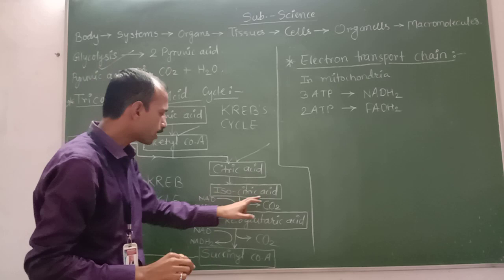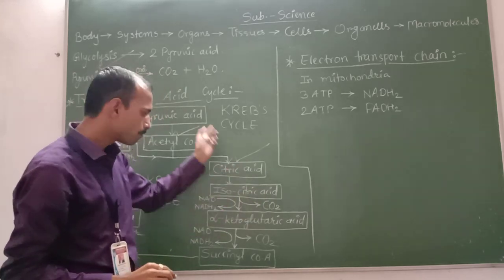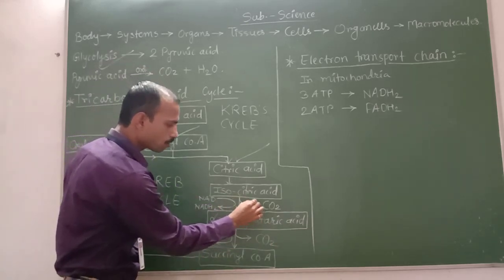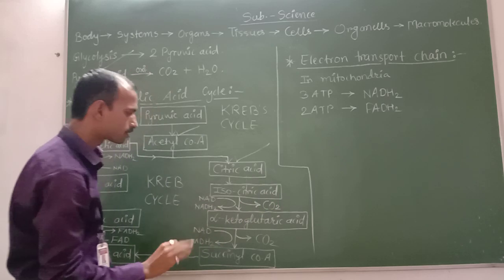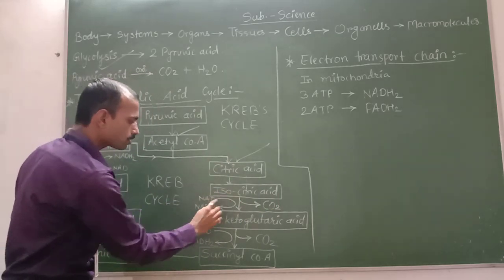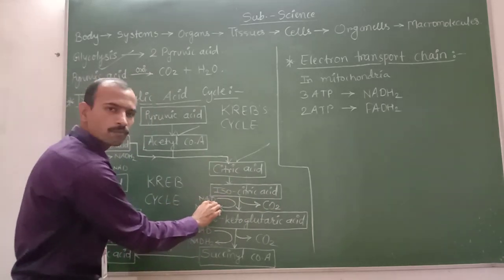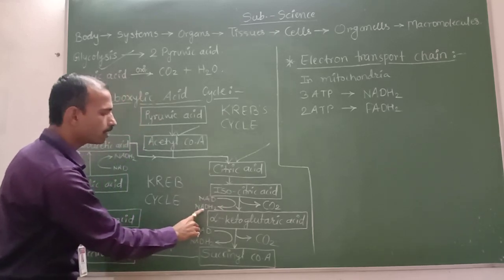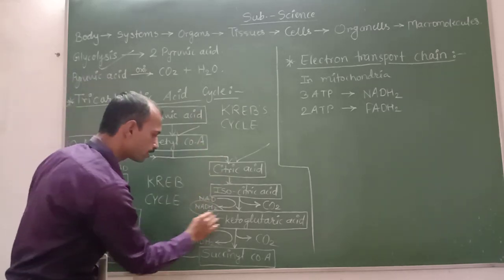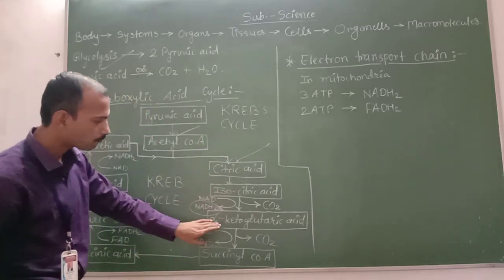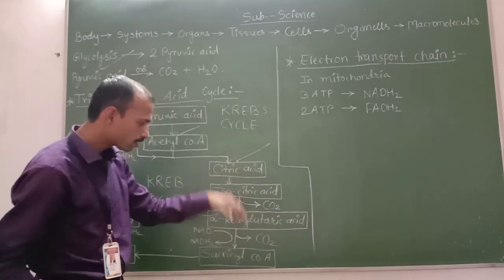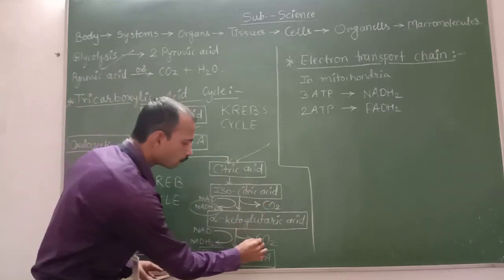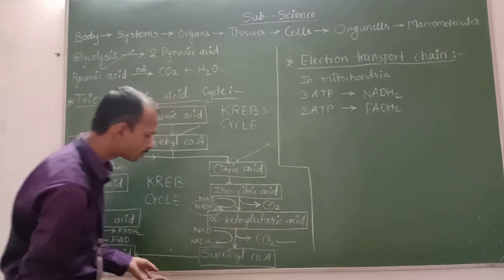When isocitric acid is further converted into alpha-ketoglutaric acid, one carbon dioxide molecule is released. In this process, NAD (nicotinamide adenine dinucleotide) is reduced to NADH₂.